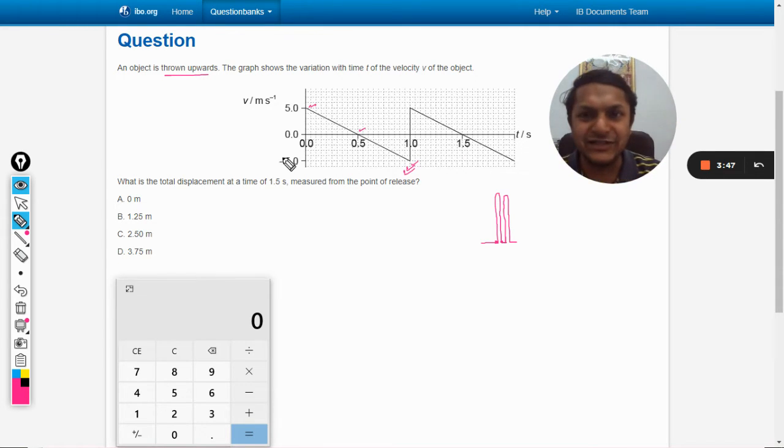This is a very beautiful question because there is a good concept involved. The concept is the area of the v-t curve gives you the displacement. Because displacement and velocity are vectors, negative velocity will give you negative area. To find the total displacement, we will find the total area under the curve. We need to find this area, this area, and then this area.